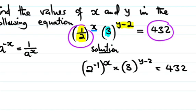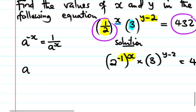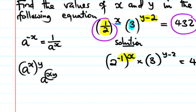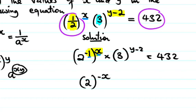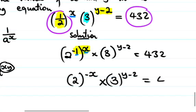Now I need to apply laws of indices again. From the previous video, when you have a to the power of x, all raised to the power of y, you multiply the exponents to get a to the power of x·y. So here, negative 1 multiplied by x gives negative x. We now have 2 to the power of negative x, multiplied by 3 to the power of y minus 2, equals 432.